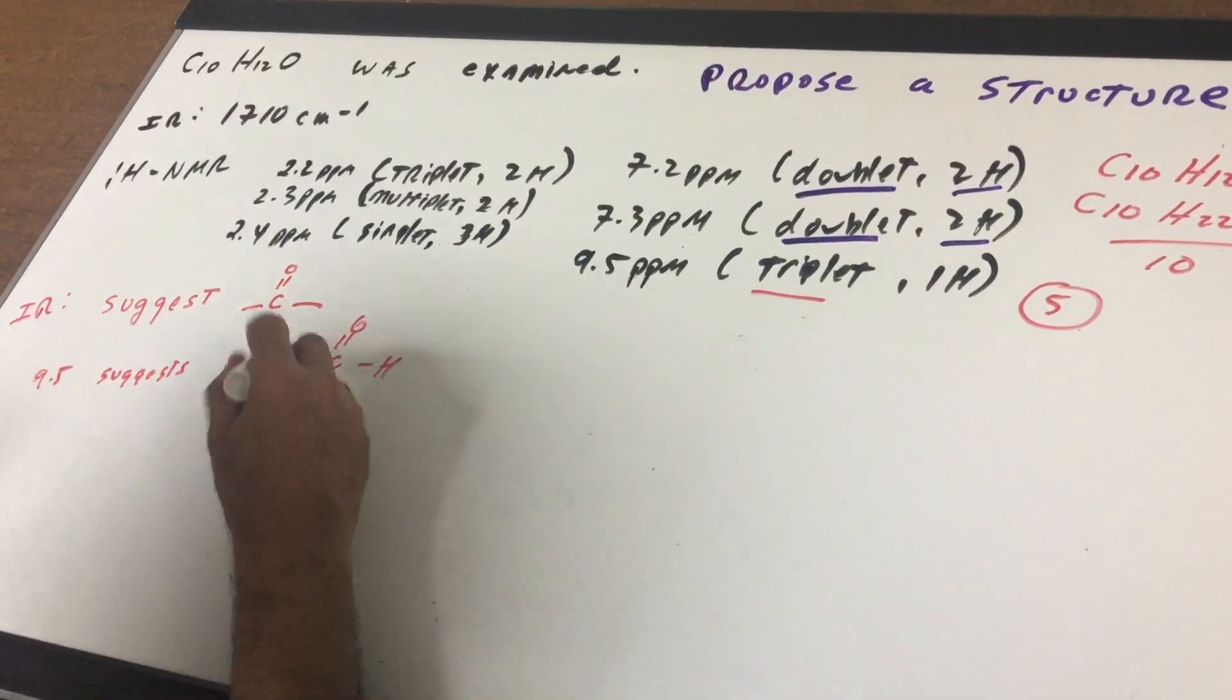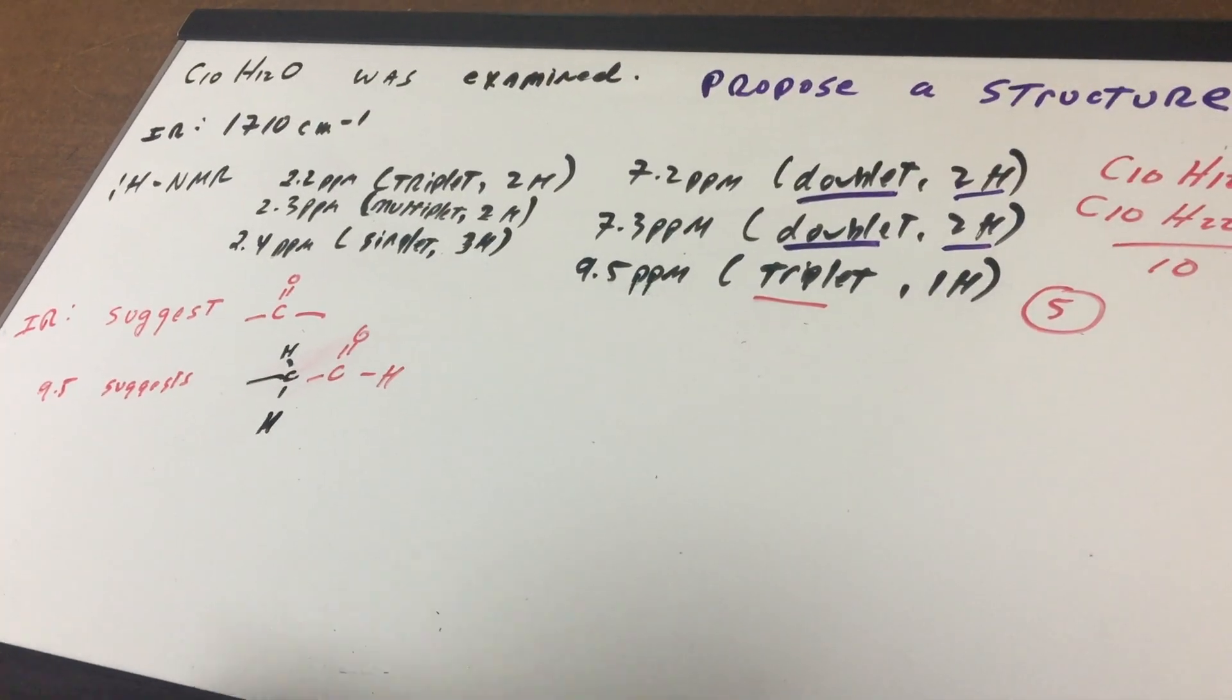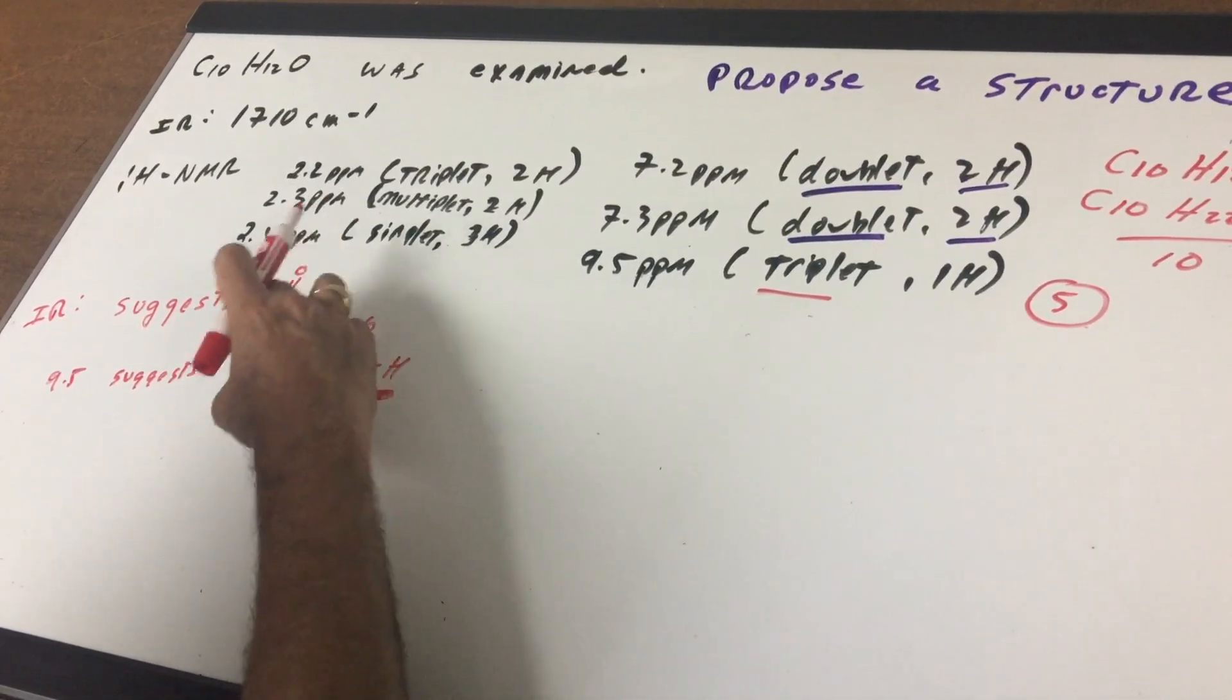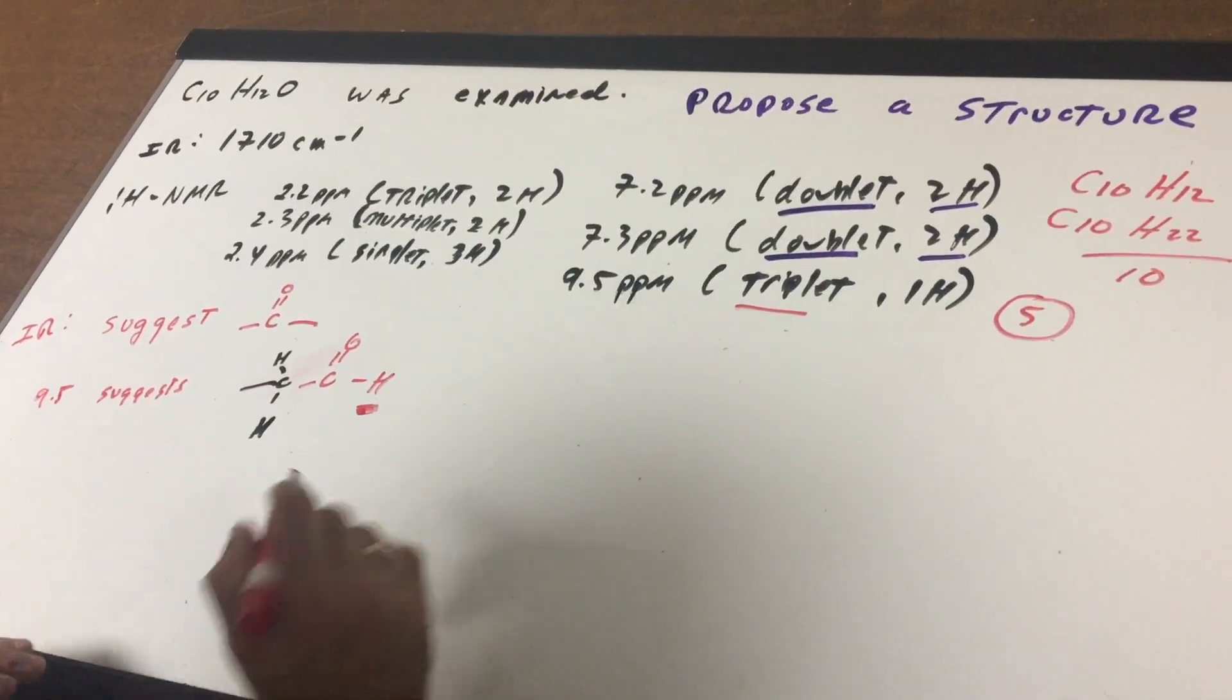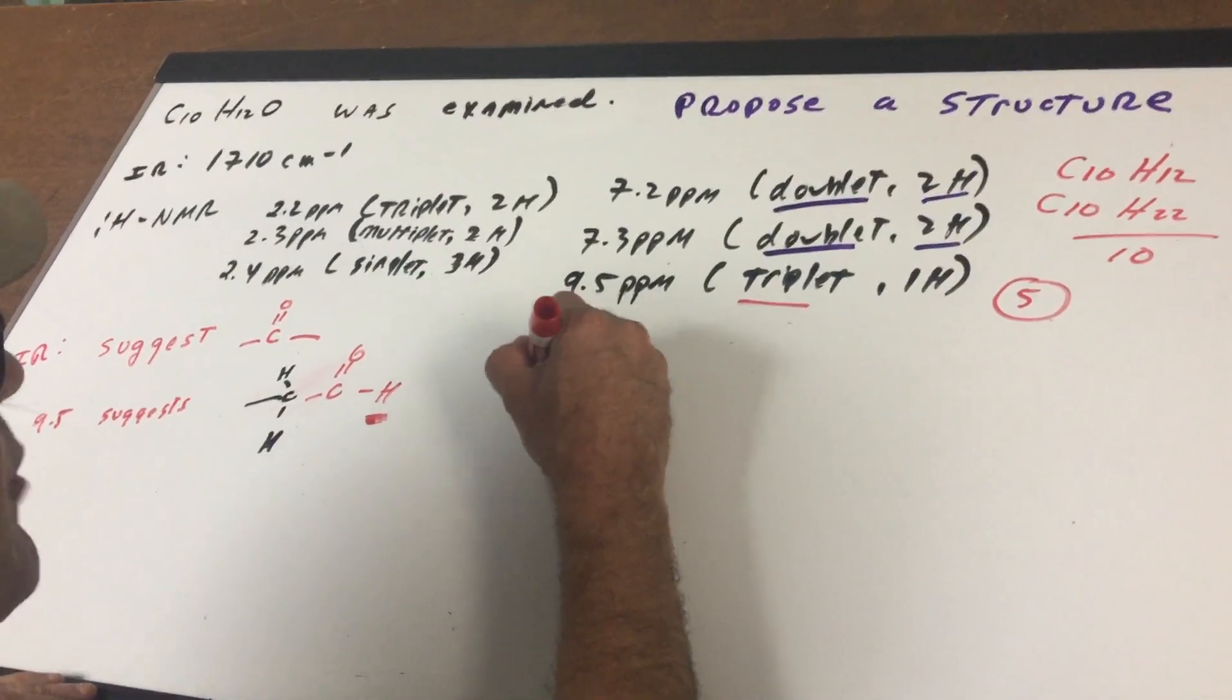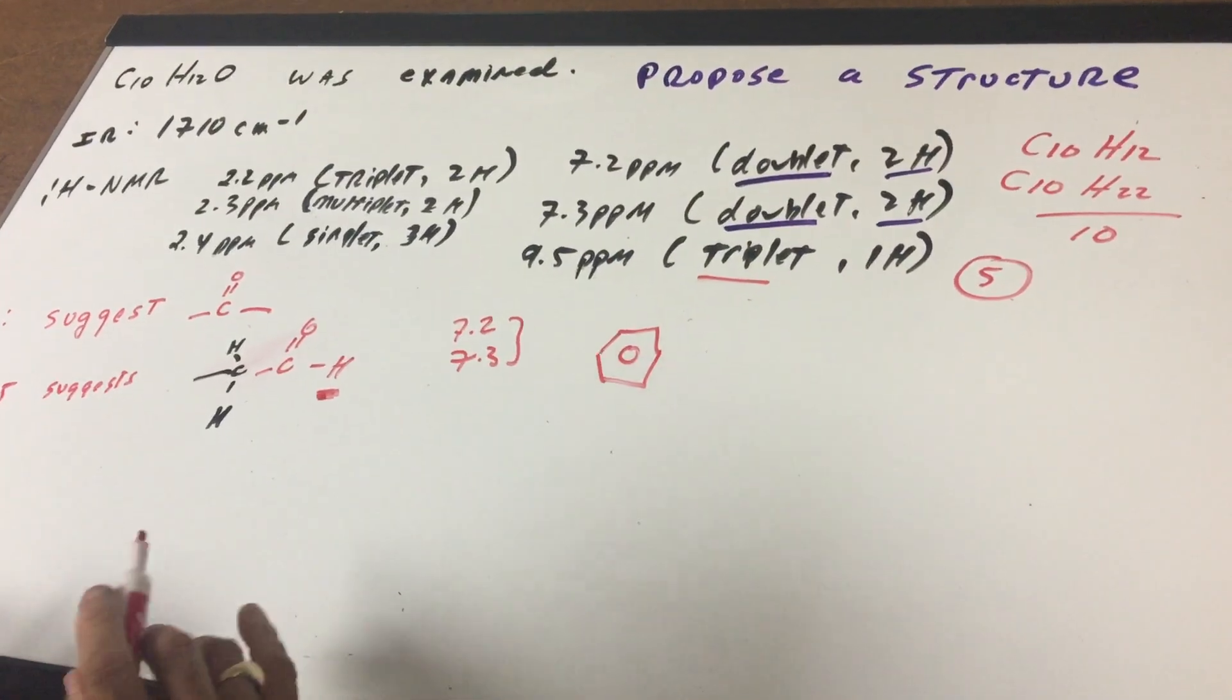Notice the aldehyde group that would confirm my carbonyl and it says it's a triplet. So that would mean that that aldehyde group is gonna be next to a CH2 group. Hopefully everybody can see that, that this would be, you jump to your next door carbon and you see there's two H's and add one, that would be a triplet. All right, so the next thing that catches my eye is the 7.2 and 7.3.